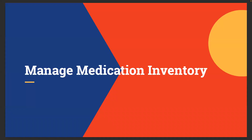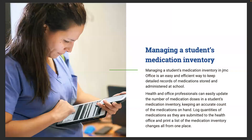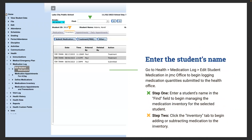Next we'll talk about managing medication inventory. Once you have the medication associated with a student, you can start logging the inventory. Managing a student's medication inventory in JMC office is an easy and efficient way to keep detailed records of medication stored and administered at school. Health and office professionals can easily update the number of medication doses in a student's inventory, keeping an accurate count of medications on hand, and log quantities as they're submitted to the health office — all from one place.